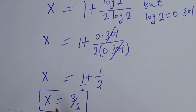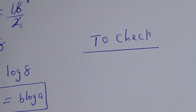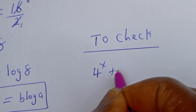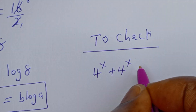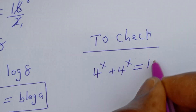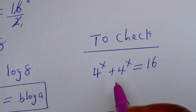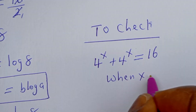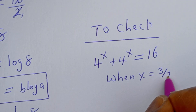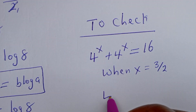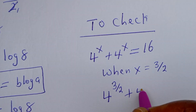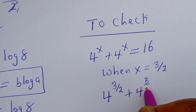This is the final answer. We can check to confirm if this is right. Let's substitute: the given equation is 4 to the power of s plus 4 to the power of s equals 16, where s is 3 over 2. So we have 4 to the power of 3 over 2 plus 4 to the power of 3 over 2.